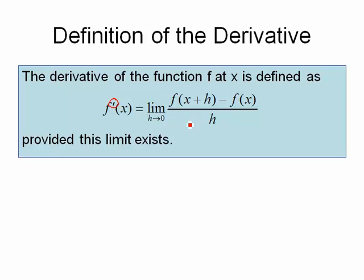So if I plugged a number into this function, it would tell me the slope of the tangent line at that number. If we can work this limit out, all we have to do is define slope of tangent line and just plug numbers into that.